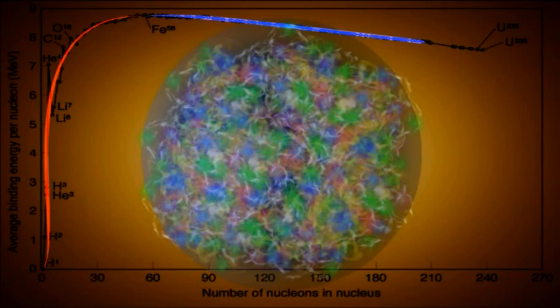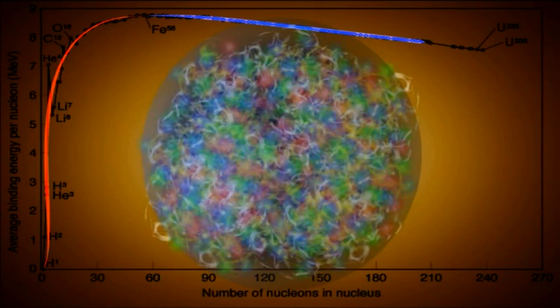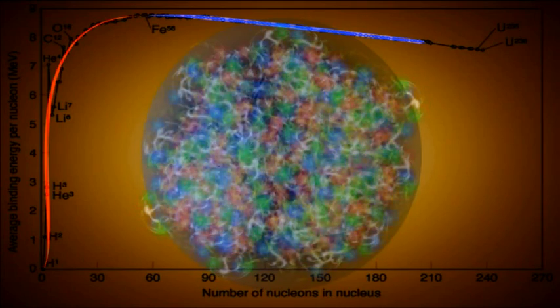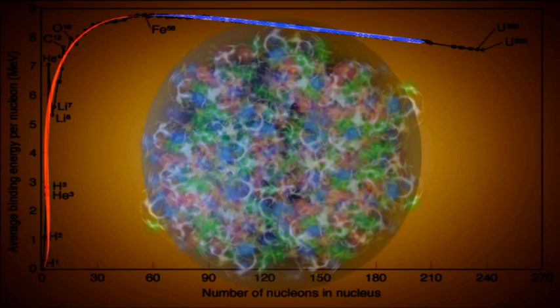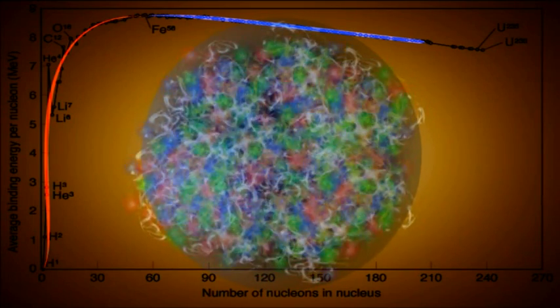When we get to lead and bismuth, and the nucleus contains 207 nucleons, the electric force wins, and the atomic nuclei larger than this are unstable and come apart by themselves, although it may take a while.